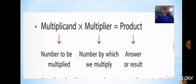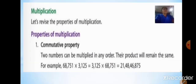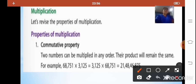Now let us see the properties of multiplication. The first property is the commutative property: two numbers can be multiplied in any order and their product will remain the same. This is similar to the commutative property of addition — just as two numbers added in any order give the same sum, two numbers multiplied in any order give the same product.